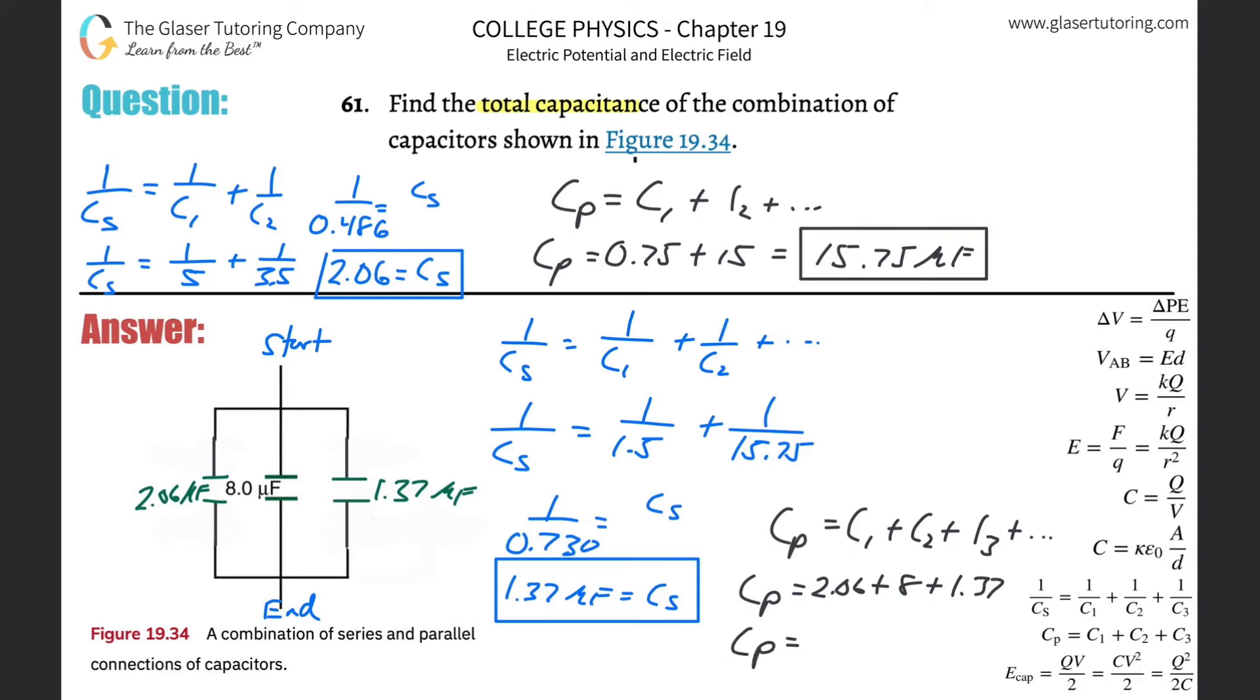We've got three here, so we're going to add all three together: 2.06 plus 8 plus 1.37. Let's see—we'll take that value, add it to 8, then add that exact value from before. I'm adding the exact values, so if you use the rounded ones it might not come out precisely, but as long as you're in the ballpark, we get 11.4 microfarads.